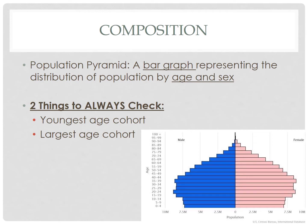Here is how they work. Men are on the left, women are on the right, young are at the bottom, old are at the top. They are separated into five-year age intervals called cohorts. The width of each bar can be based on total population number or percentage.